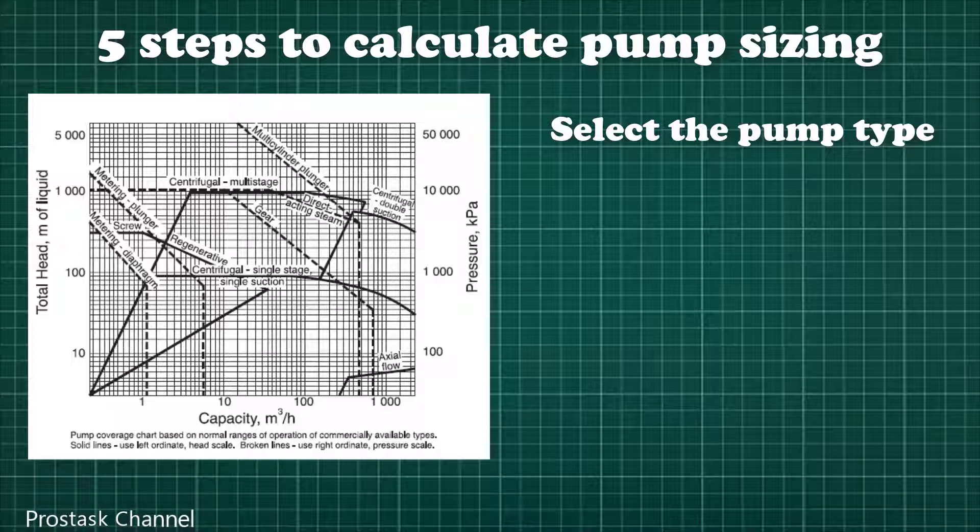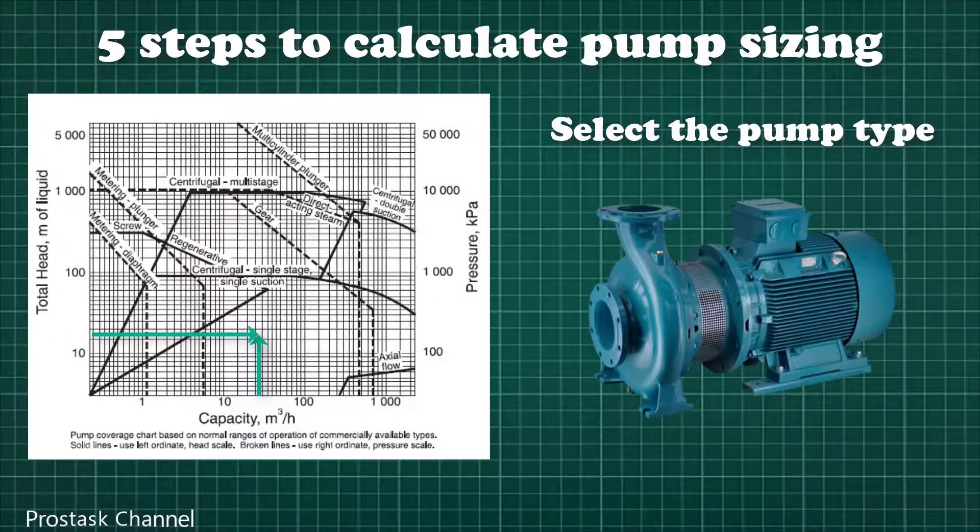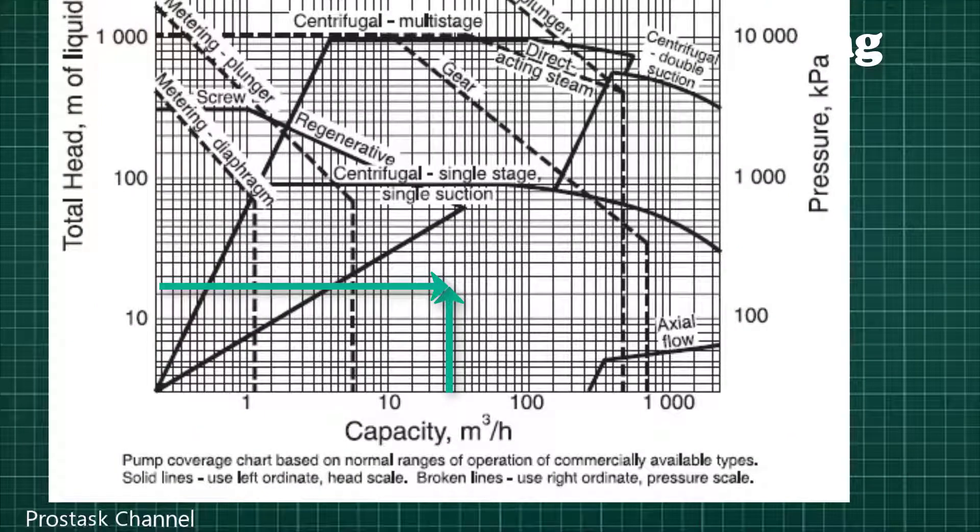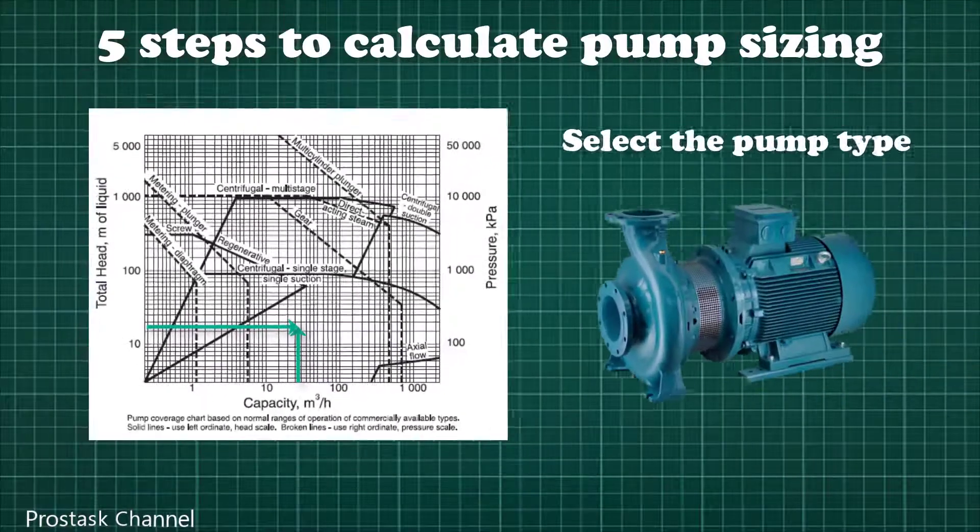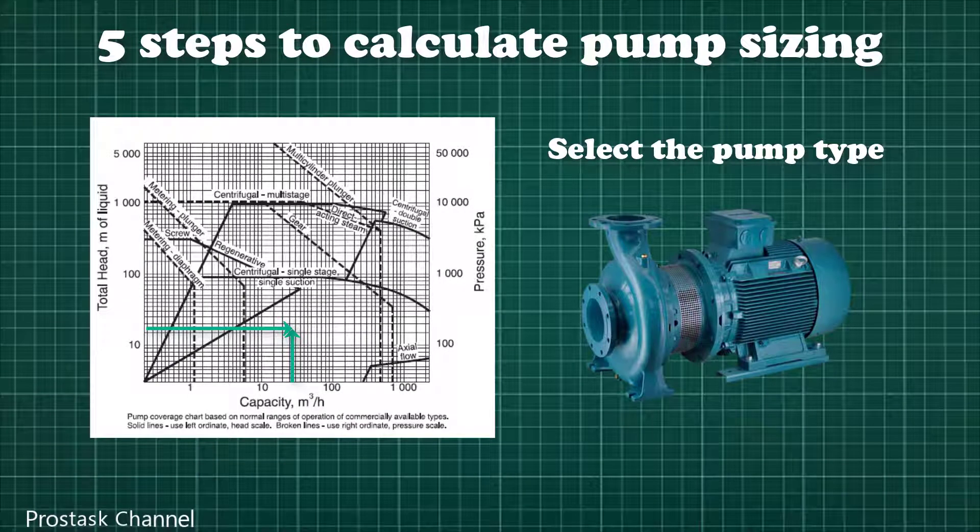This picture presents the shortcut method to select the pump by using only the flow rate and total dynamic head. Where X-axis is pump design capacity and Y-axis is total dynamic head. From this graph, pump types such as centrifugal single-stage, multistage, metering diaphragm, metering plunger, axial flow can be selected.